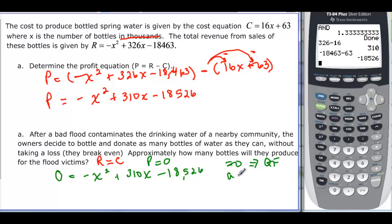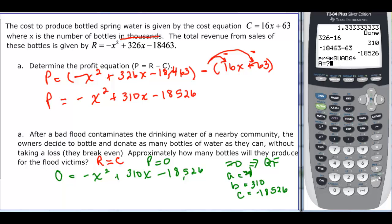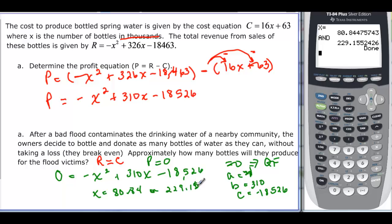So we know that a is negative 1, b is 310, and c is that negative 18,526. So program quadratic 84 quad 84, enter again, and we have negative 1 enter, 310 enter, and then negative 18,526, and it tells us that x is going to be equal to 80.84, or 229.16 if we round it.